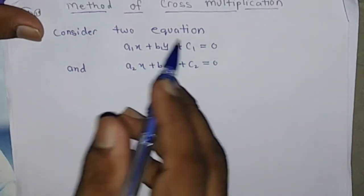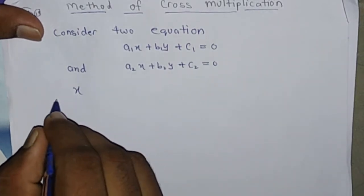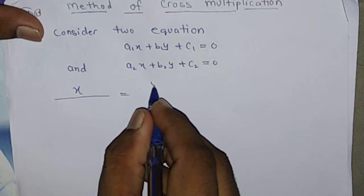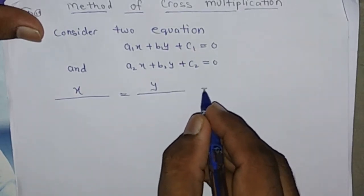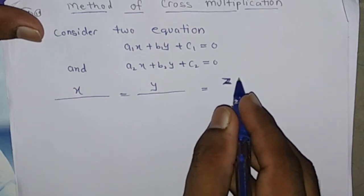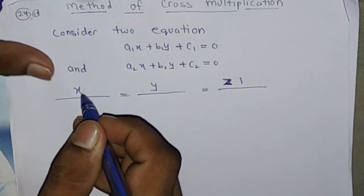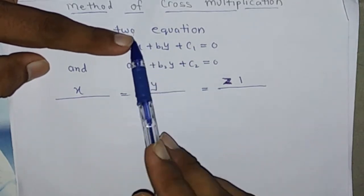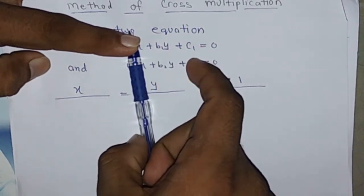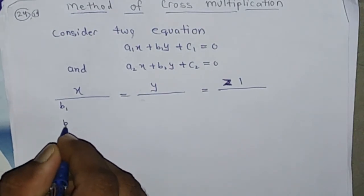For solving it by cross multiplication we arrange it in this form: x equals y equals 1. In the denominator of x we arrange the coefficient of y, means we hide this term and put B1 C2 and B2 C1 here.